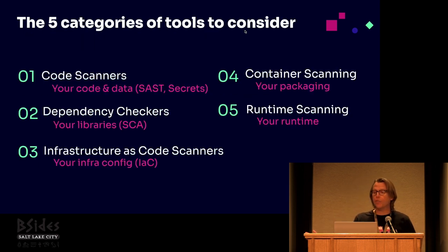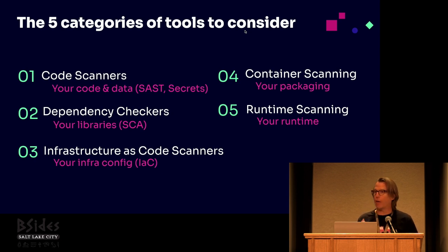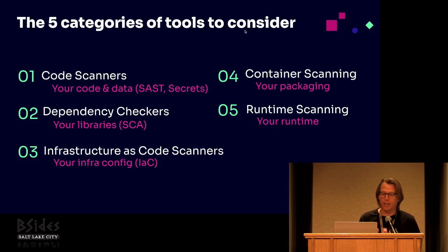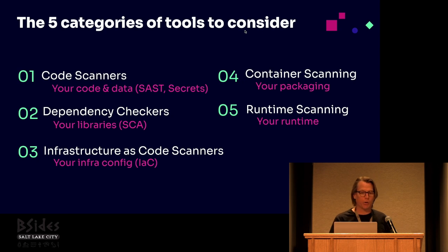Here are the categories for the tools we're going to go through: code scanners — static code analysis and secrets detection, that's a very important piece; dependency checking, with all the focus on software supply chain and making sure our software libraries are up to date; infrastructure as code scanners; container scanning for your software packages; and runtime scanning. Those are the five categories we're going to cover.